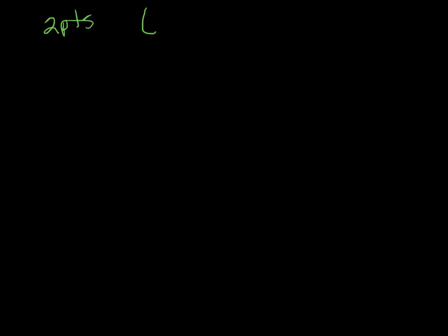Let's have a look at a question where we're given 2 points and we're asked to find the equation of the line in slope-point form. Here are 2 points: 3 comma 1, and negative 1 comma negative 2. These 2 points lie on a line, and we want to figure out what the equation is. The first thing we need to do is figure out what the slope is.